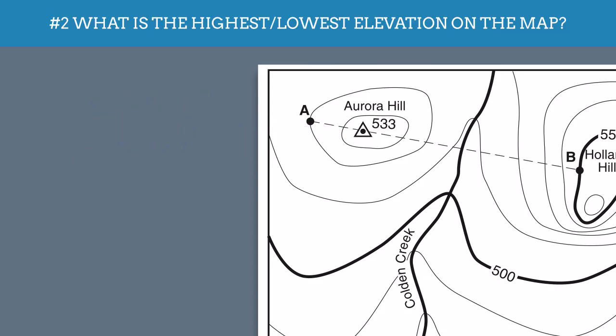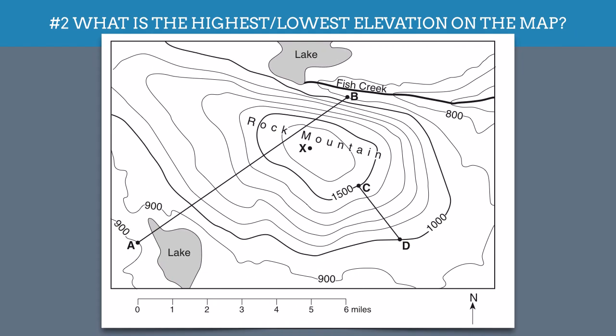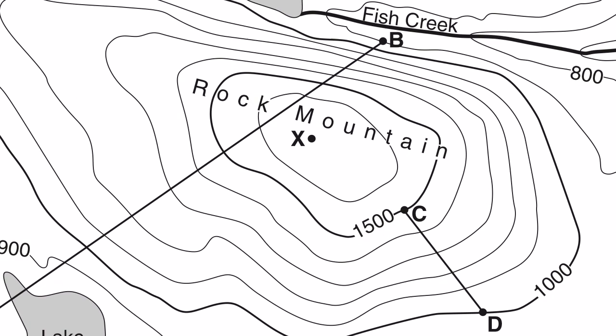However, unfortunately, some maps don't give you that, like this one. This map of Rock Mountain is clearly the top of a peak, shown at point X here. But we have to figure out what could the elevation of point X be?